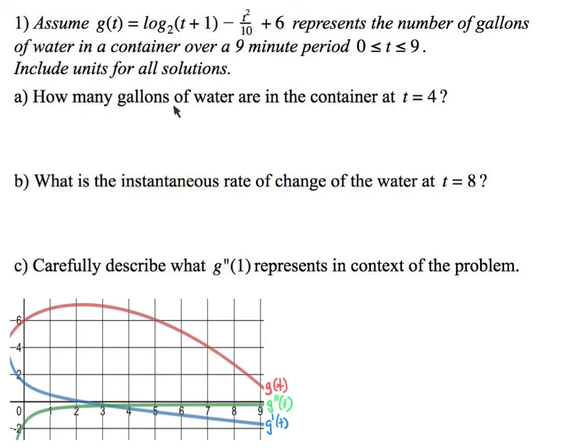So let's answer this question. How many gallons of water are in the container at t equals 4? Now, real quick, are you okay that the container has 6 gallons of water at time 0? Can you see how this container is filling but also leaking? Think of it as a leaking container that's also being filled at the same time. So how many gallons of water are in the container at t equals 4? So what that means is I just want g of 4. It's as simple as that.